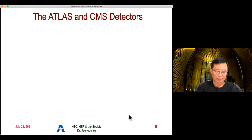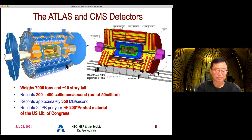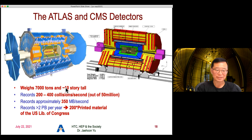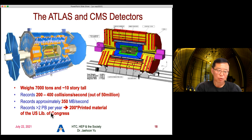The accelerator gives you the signatures and ideas of how the structure of matter looks, but we have to have detectors — like cameras — to catch the events. Each one of these detectors weighs about 7,000 tons, is ten stories tall, and records a huge number of collisions per second out of 50 million possible collisions. It records approximately 350 megabytes per second, and it'll be even higher as we go to higher luminosity and beam intensity, recording two petabytes per year — and it's going to be about ten times higher than that.